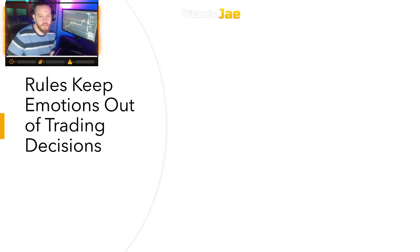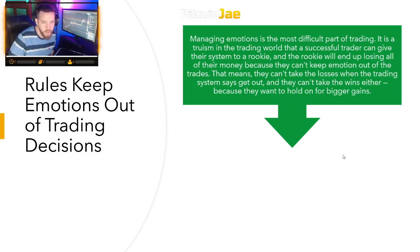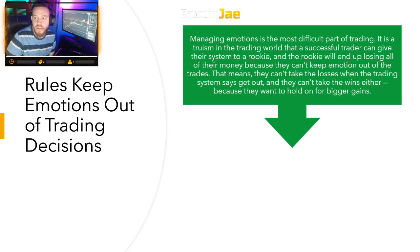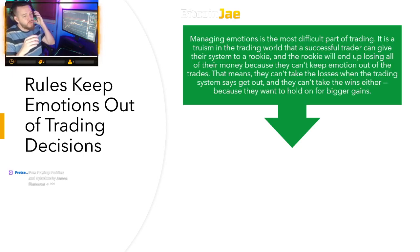Keep emotions out of trading decisions. You do not want to make decisions based on your emotions — that's why you always want to have a trading plan with all the rules set in stone before you enter and execute a trade. Managing emotion is the most difficult part of trading. A successful trader can give their system to a rookie and the rookie will end up losing all their money because they can't keep emotions out of the trades — they can't take the losses when the system says get out, and they can't take the wins either because they want to hold on for bigger gains.